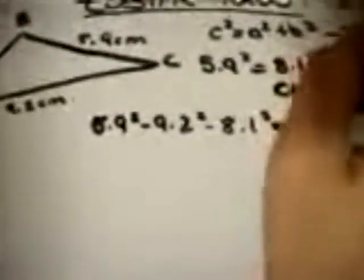Which equals minus 2 times 9.2 times 8.1 cosine A.